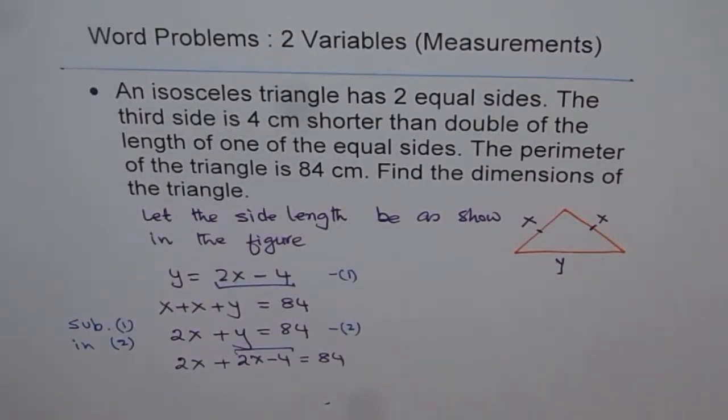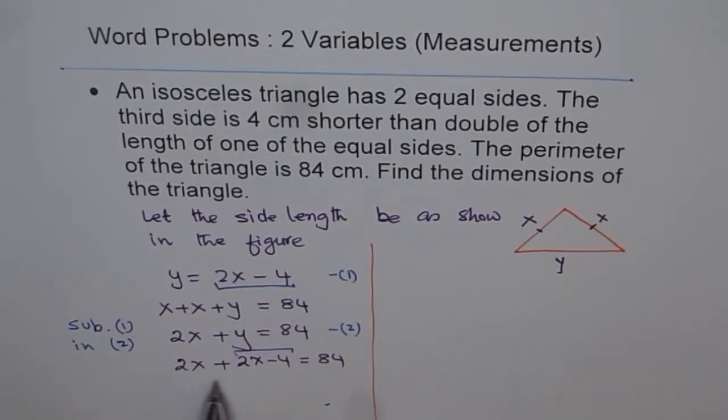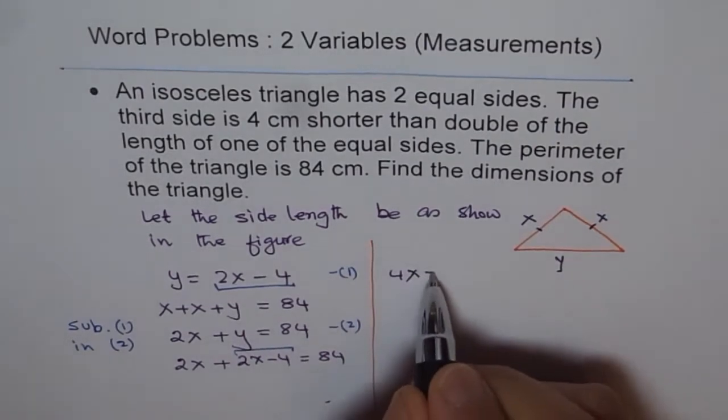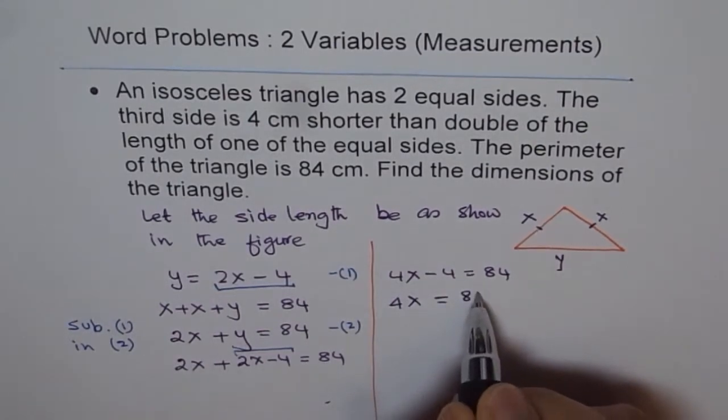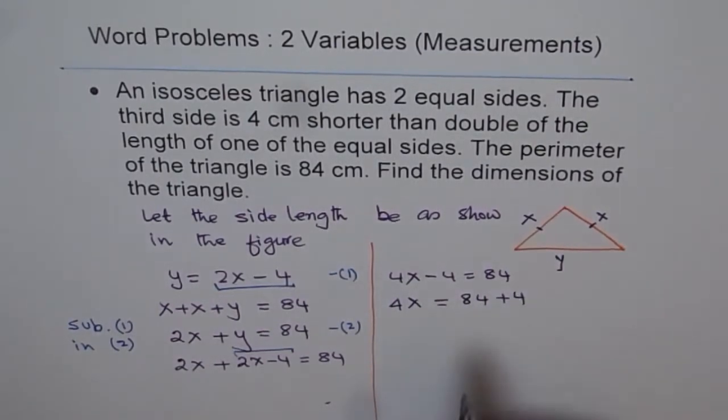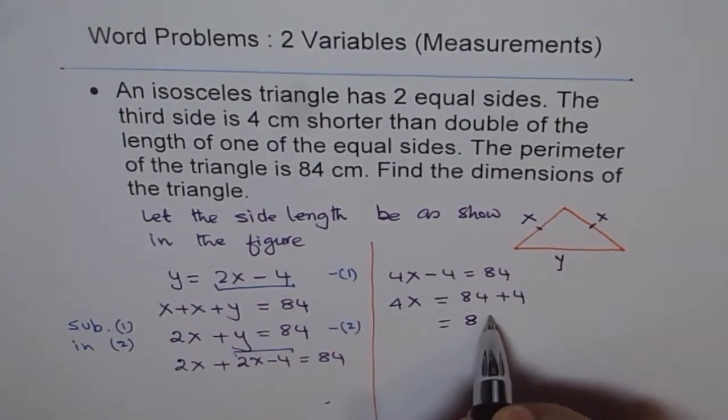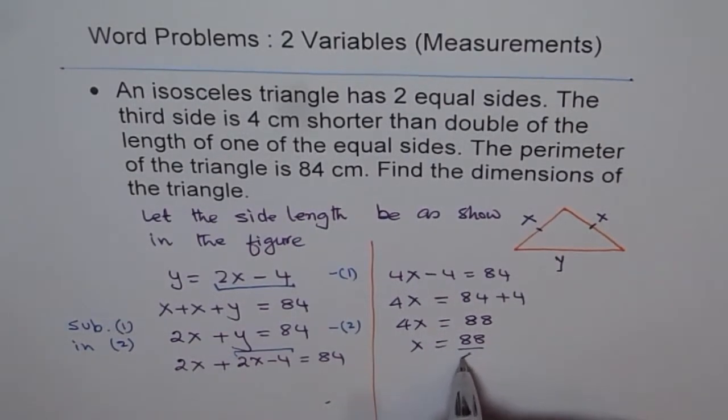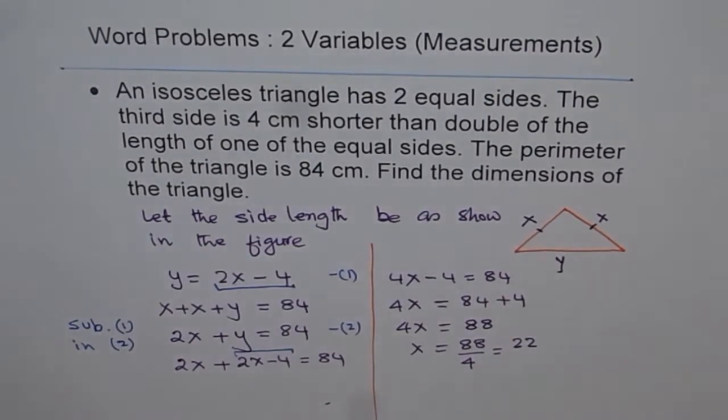Now we have an equation in a single variable which can be solved easily. Combining the terms, we get 4x minus 4 equals 84. Therefore, 4x equals 84 plus 4, which is 88. So x equals 88 divided by 4, which gives us 22.